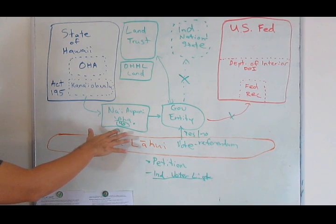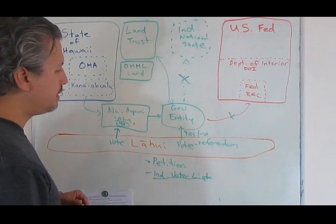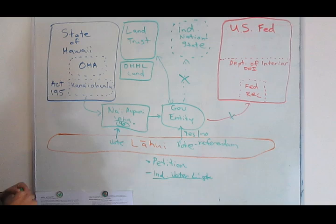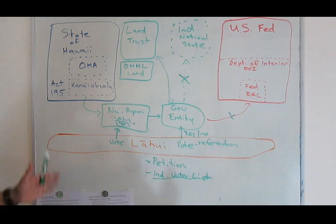Really, Na'iaopuni, with all its flaws, is an option to create a Hawaiian governing entity. However, it may not have the authority, may or may not have the authority, to make permanent deals like on the land trust or federal recognition.